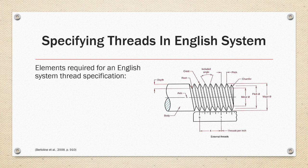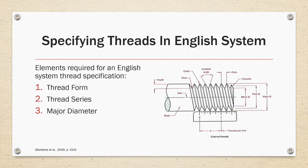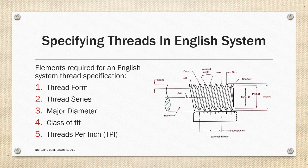The elements that are required for an English system thread specification are: one, the thread form; two, the thread series; three, the major diameter; four, the class of fit; and five, the threads per inch or TPI.